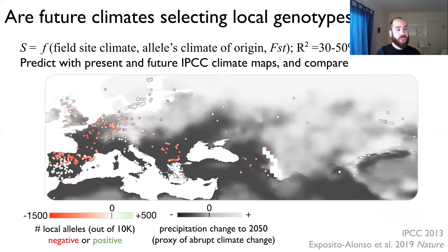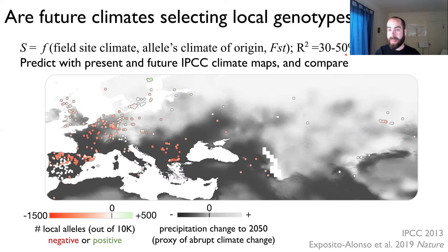We were wondering if we could create quantitative forecasting models for what natural selection will look like under future climates. We tried to fit a function where the selection coefficients measured in field experiments were predicted by the climate of the field experiment, the allele's climate of origin, and selection signatures such as FST. Using random forests under cross-validation, it seemed we captured a good amount of the variance.